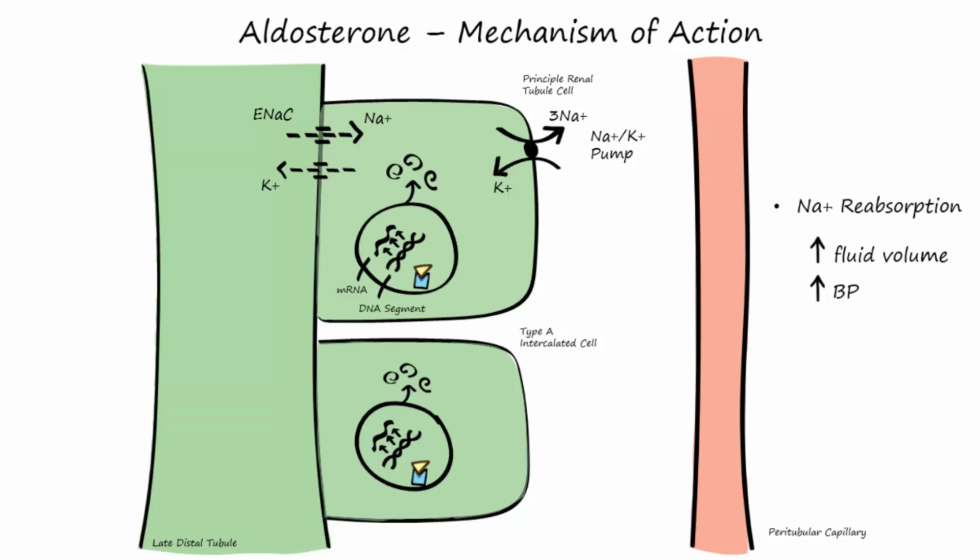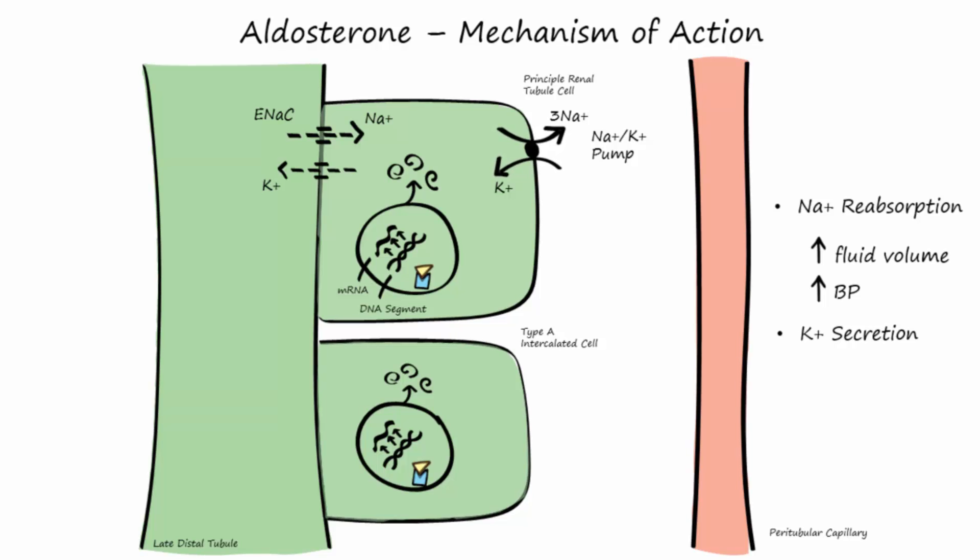As opposed to the reabsorption of sodium, principal cells secrete potassium. Potassium comes into the cell because of the sodium-potassium pump. Because of its high intracellular concentration, it will then diffuse out through potassium channels on the apical membrane and enter the filtrate of the tubular lumen.